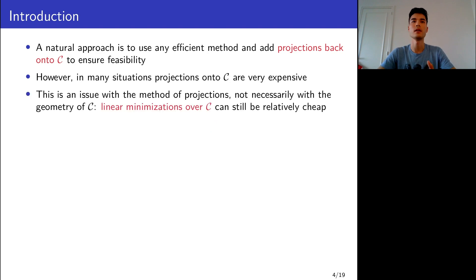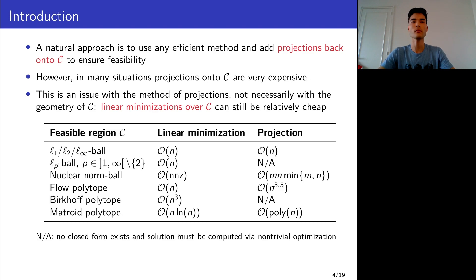This is not necessarily because C may have a weird shape so that it is hard to do operations on it, because for some sets and even for commonly used sets in optimization, projections can be expensive while linear minimizations are relatively cheap. For example, if you take the L1, L2 or L-infinity ball, projections and linear minimizations have the same worst case complexity, but linear minimizations are much easier to implement in practice.